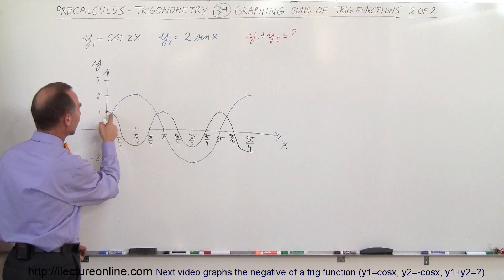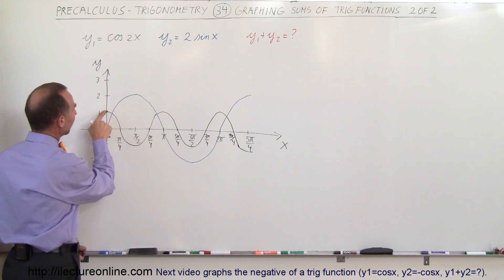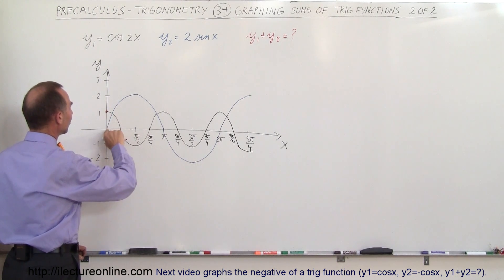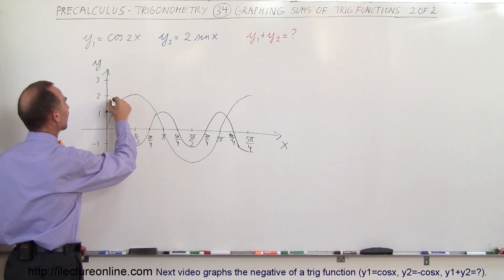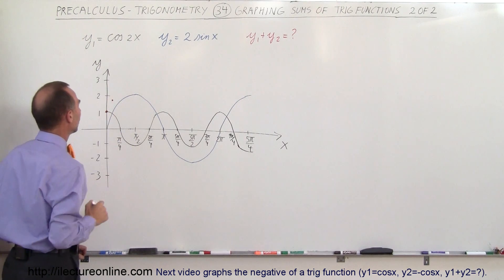Notice that at this point right here where they cross, the cosine function is slightly less than 1, the sine function is slightly less than 1 at that point, so when we add it together, we get something less than 2, right there.